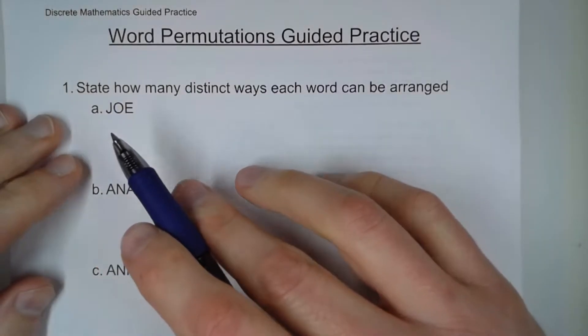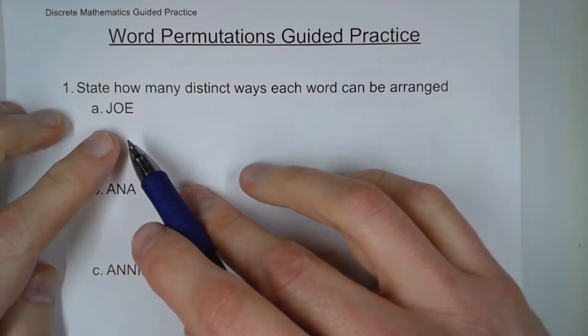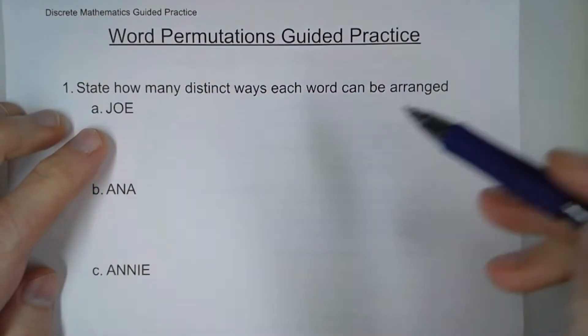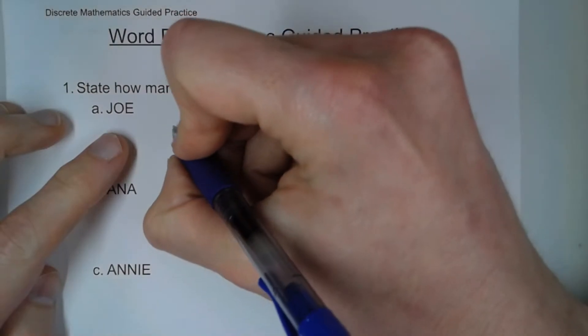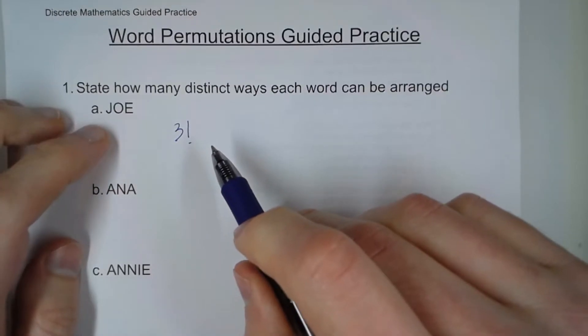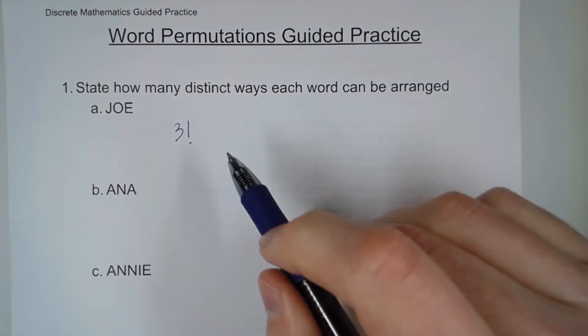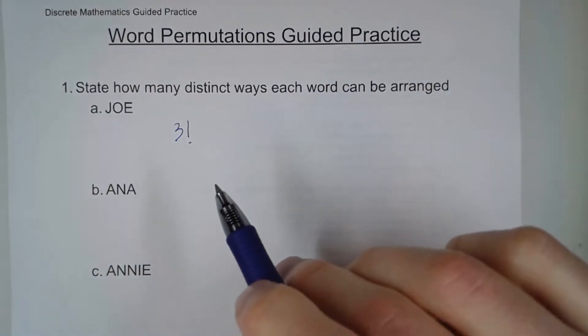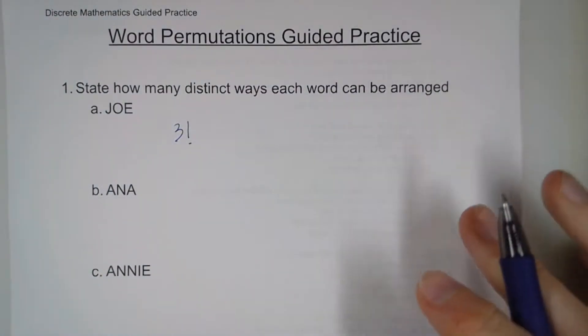So how many distinct ways can we rearrange each word? Well, here we have Joe, J-O-E, with three different letters. So this is three factorial, because there's three letters that can go in the first slot, two letters that can go in the second slot, and then one letter that can go in the last slot. So three times two times one gives us three factorial.